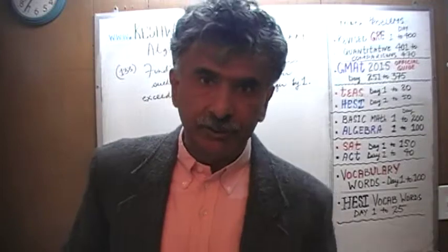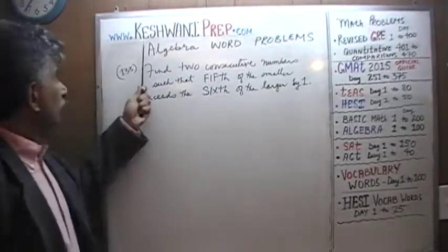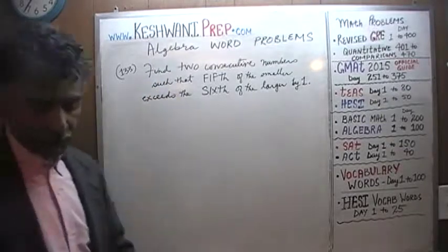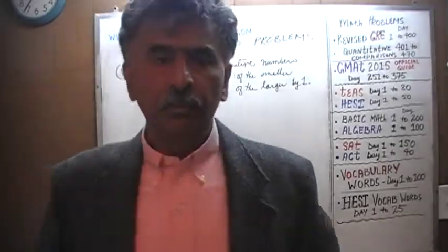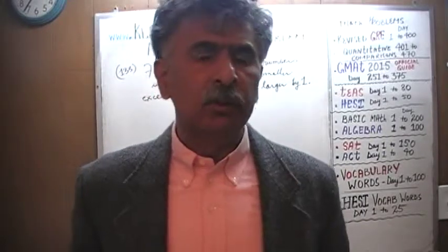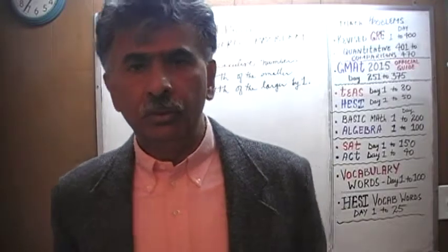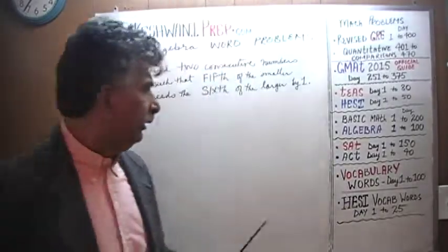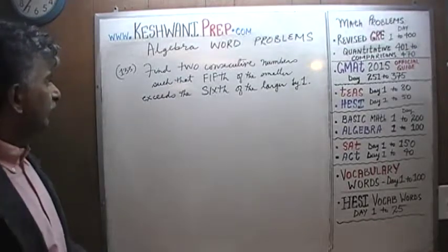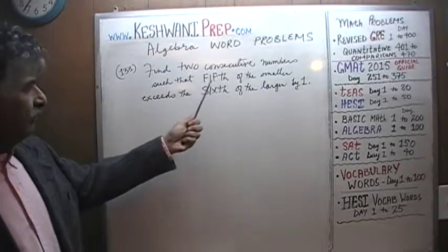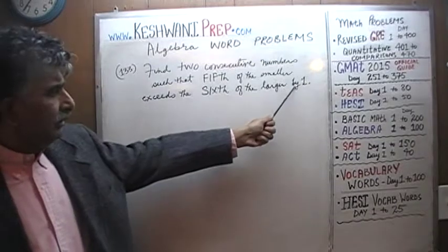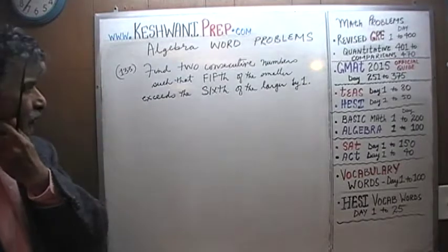Hello, my name is Keshwani — K-E-S-H-W-A-N-I. We are here because we want to learn how to solve algebra word problems. Today we'll do problem number 133 and 134. Problem number 133 is already on the blackboard. It says: find two consecutive numbers such that the fifth of the smaller number exceeds the sixth of the larger one by one.